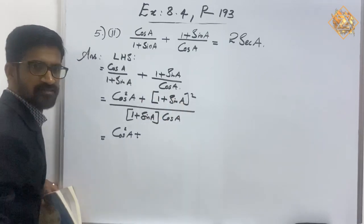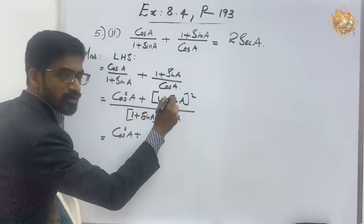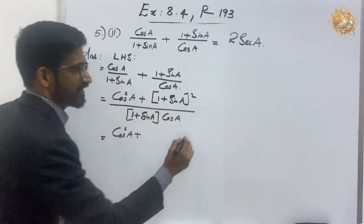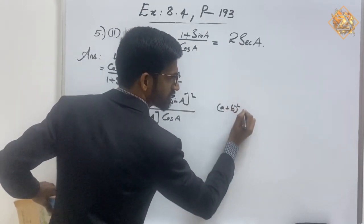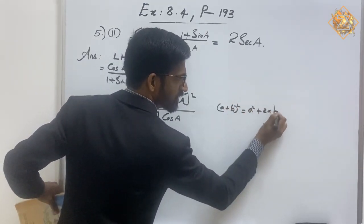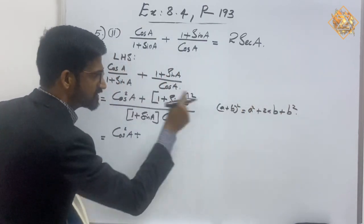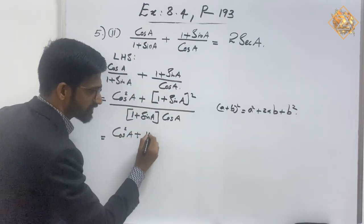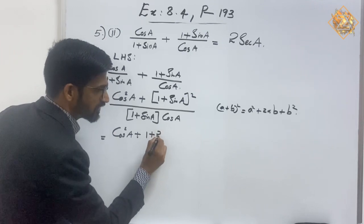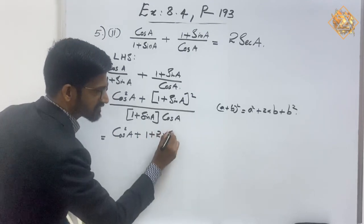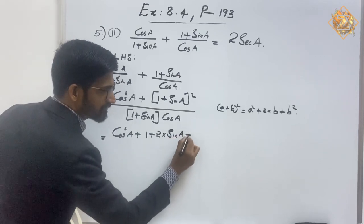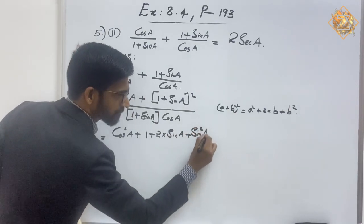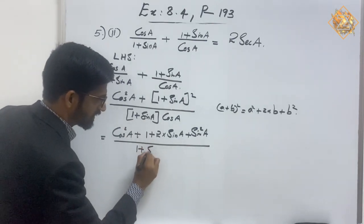Now we expand (1 + sin(a))². This is in the (a + b)² form. The identity is a² + 2ab + b², so expanding: 1² = 1, plus 2 × 1 × sin(a) = 2sin(a), plus sin²(a). All over (1 + sin(a)) × cos(a).